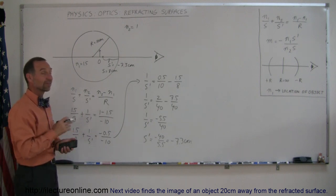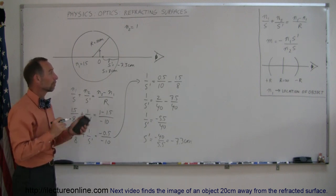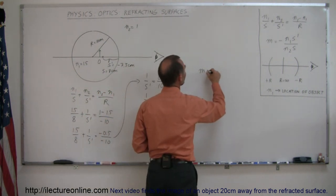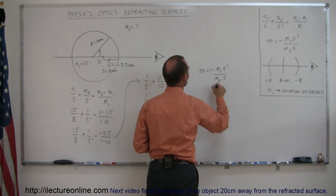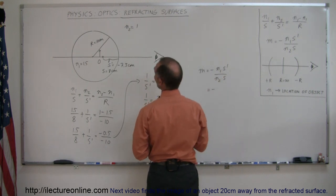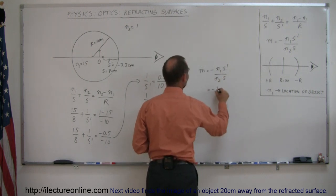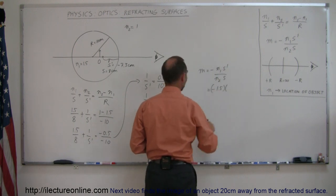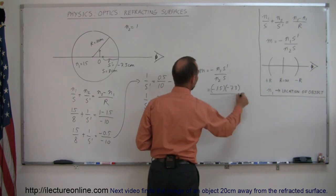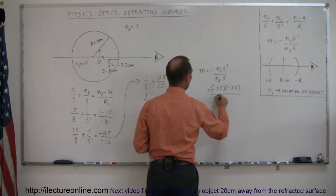But what's the size, and is it upright or inverted? For that we need our second equation, m is equal to minus n1 s prime over n2 times s, so minus n1, n1 was 1.5, times s prime, which was minus 7.3, divided by n2, which is 1, times s, which was 8.